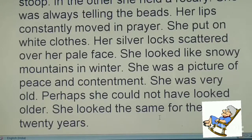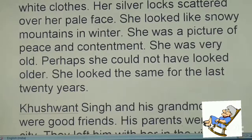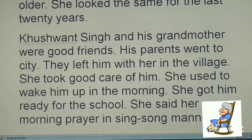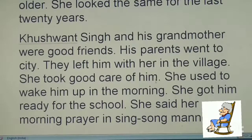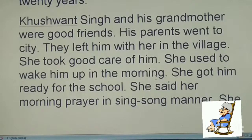She was a picture of peace and contentment — contentment means satisfaction. She was so old that perhaps she could not have looked older, and she had looked the same for the last 20 years. Khushwant Singh and his grandmother were good friends. She was dressed in white and was a symbol of peace and contentment — a very satisfied lady.